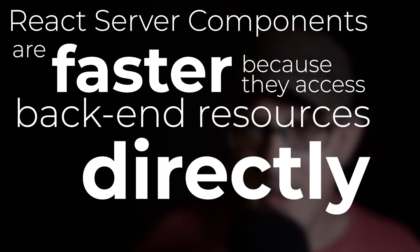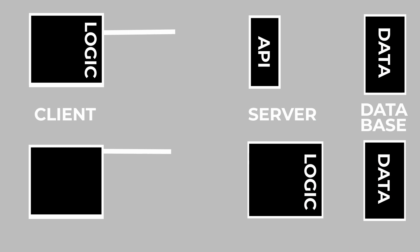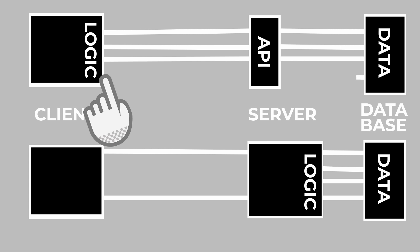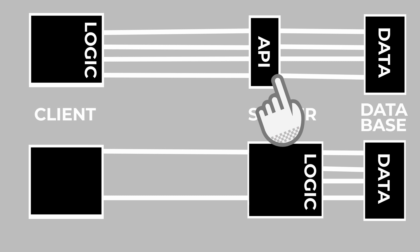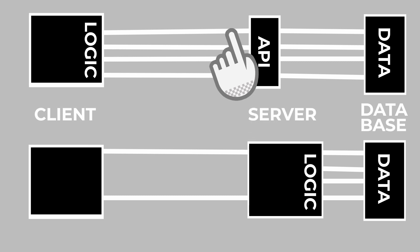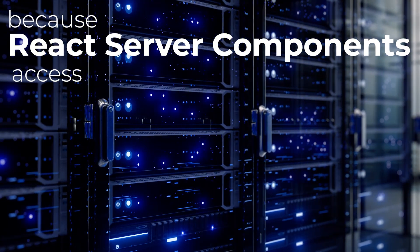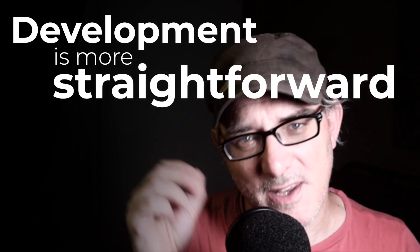React Server Components are also faster because they can access back-end resources directly. Client-side React needs to access database information via API calls, which means going through the internet. Traditional client-side React components can't access databases or other server-side resources without going through an API. Any complex business logic or anything that requires several round-trips with a server benefits from being close to where the data resides — on the database. Because React Server Components can access this back-end data directly, they end up containing less code, and the development process is more straightforward because there are fewer steps.